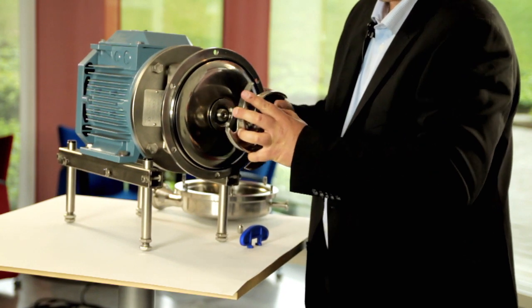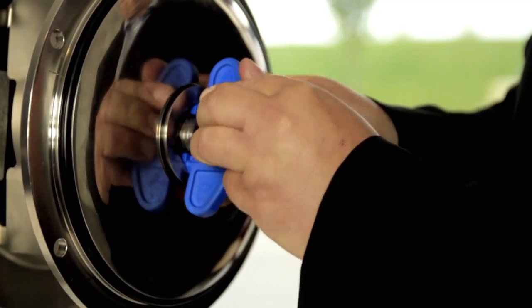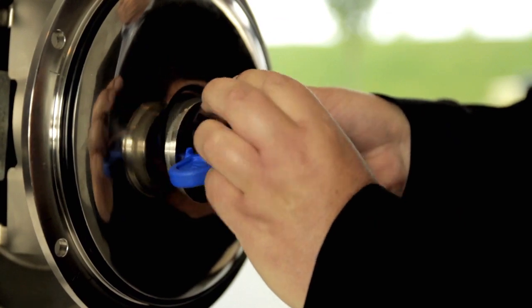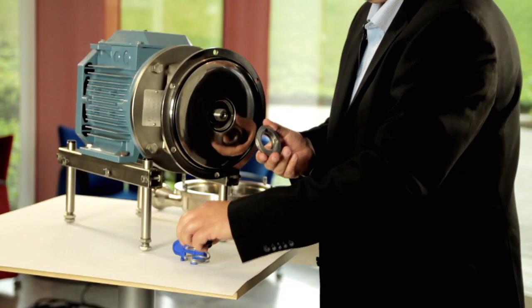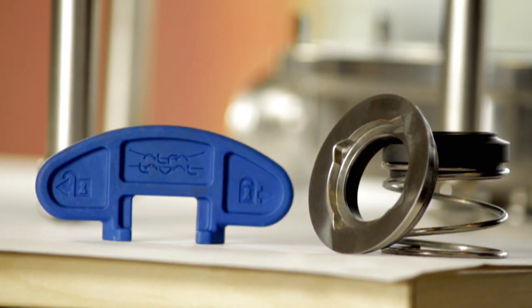Many pumps have an internal seal, which means a contamination risk. The LKH Ultrapure is different. It features an external seal solution, which makes it easy to clean and minimizes the contamination risk.